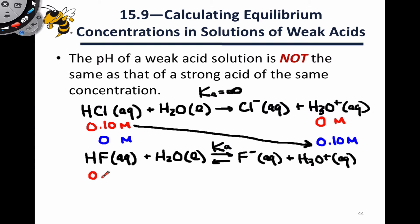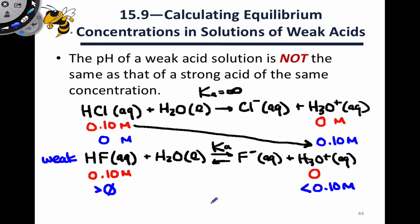If we again start with 0.1 moles per liter HF and no hydronium, at equilibrium we're going to end up with a concentration of HF in solution that is actually greater than zero, and a concentration of hydronium that is less than 0.1 moles per liter. This is because HF is a weak acid and it doesn't dissociate completely — that's the definition of a weak acid. So the pH of a weak acid solution is greater than the pH of a comparable strong acid. The strong acid dissociates completely, while the weak acid dissociates incompletely, forcing us to use the tools of equilibrium to figure out how much H₃O⁺ is present.